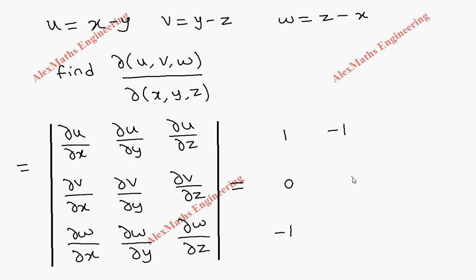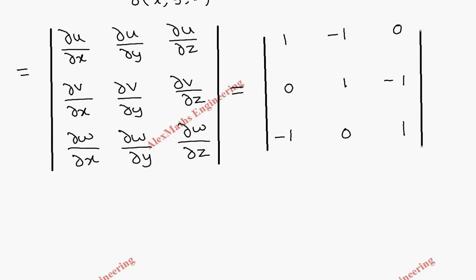And w with respect to y is 0 because both are constant. Then u with respect to z, x - y both are constants, 0. And this is -1 and here it is 1. So now we are going to evaluate this determinant as usual, expanding along row 1.